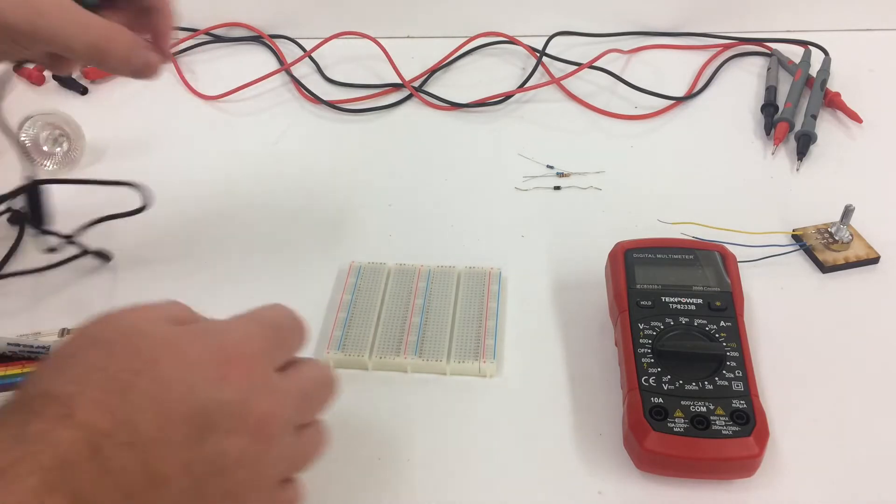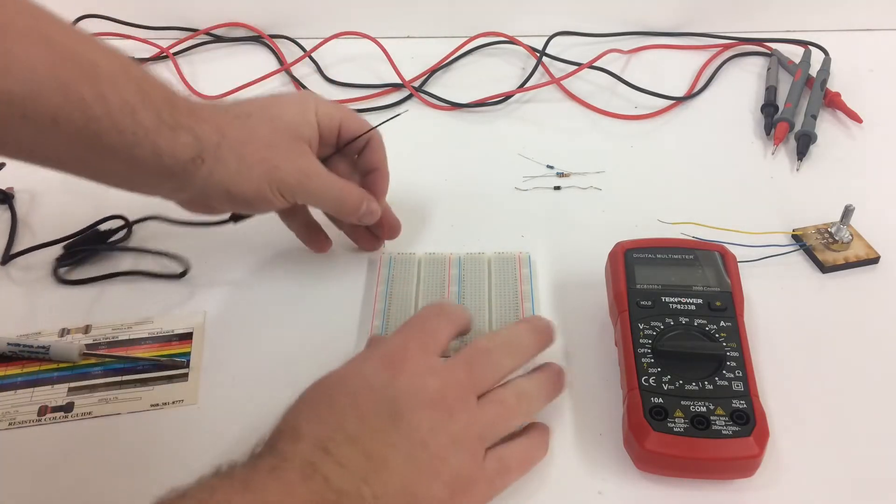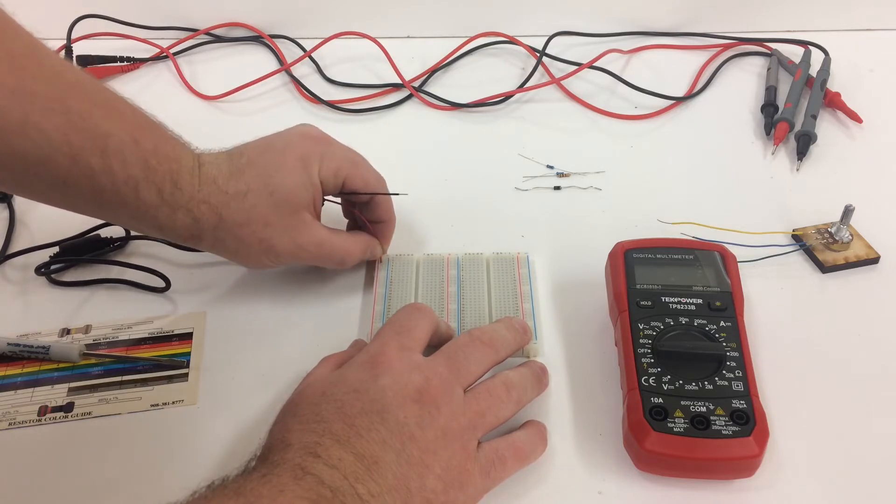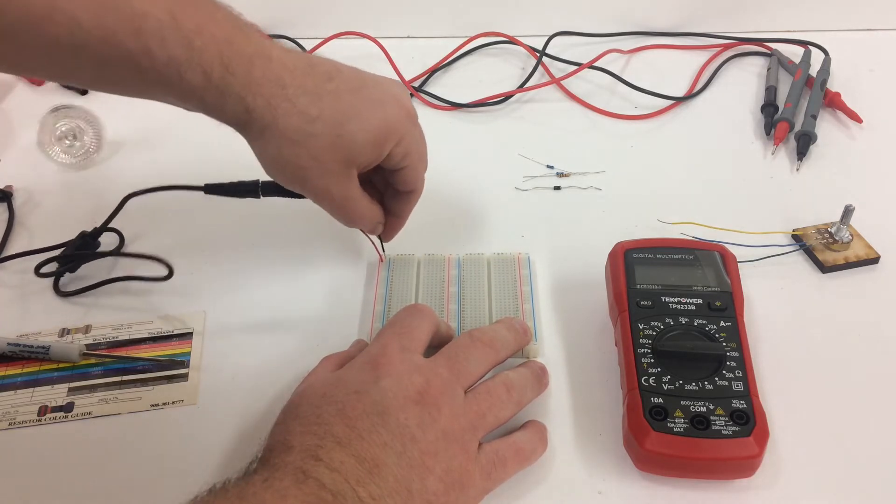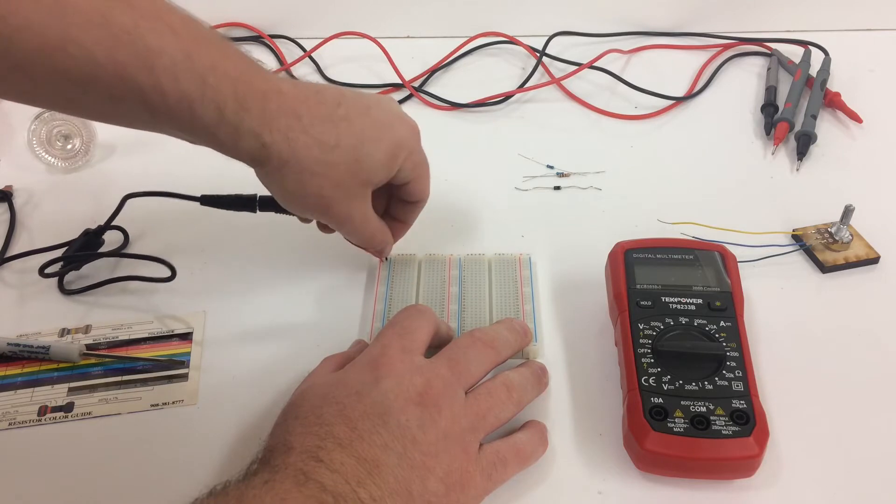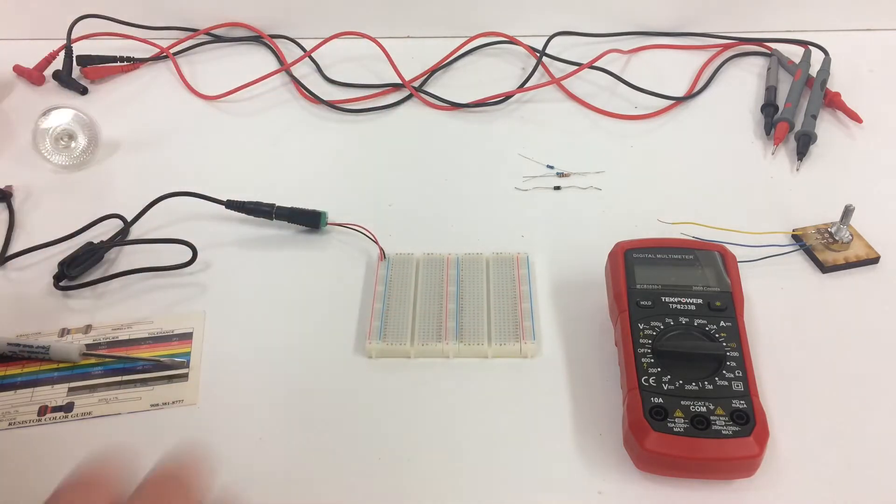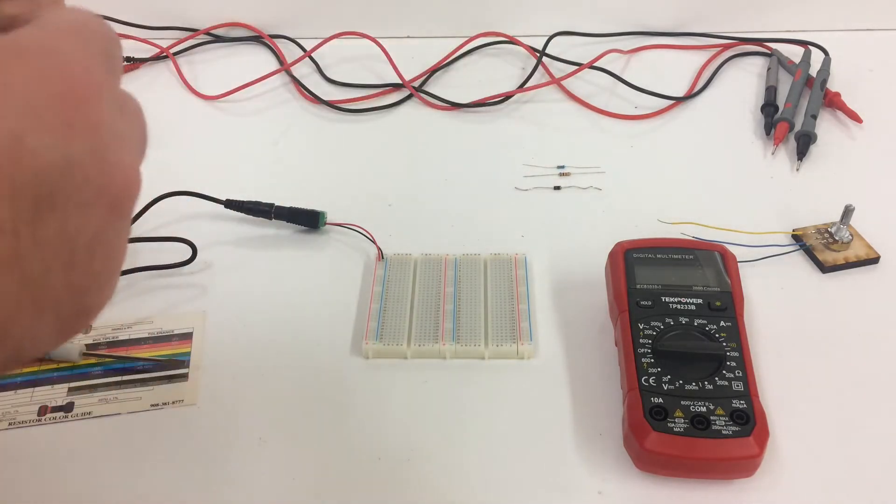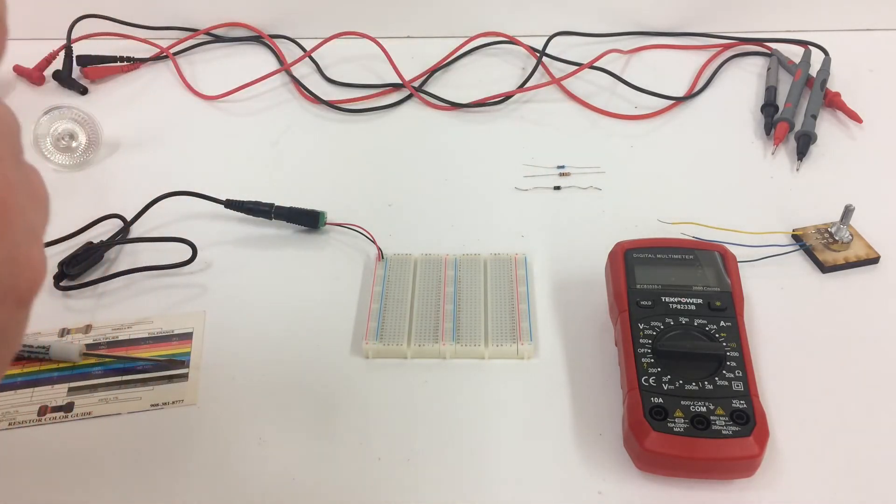So people should know how to use the breadboard right now. So I'm going to make a positive rail and a ground rail. And now from there, we need to attach a meter, one in series and one in parallel.